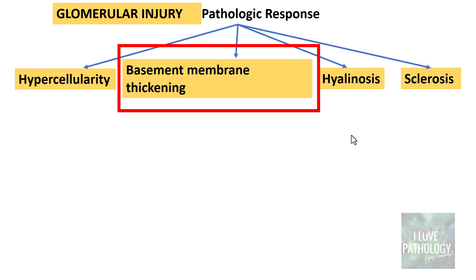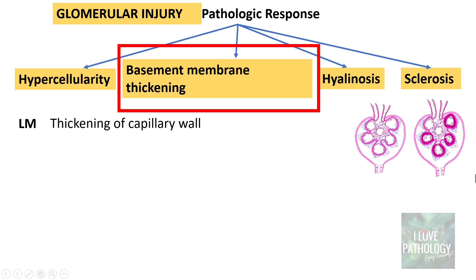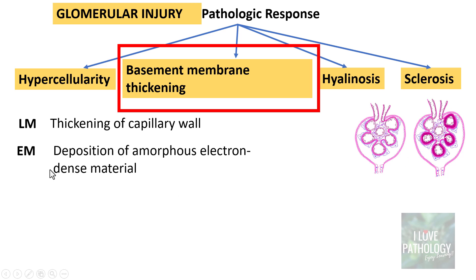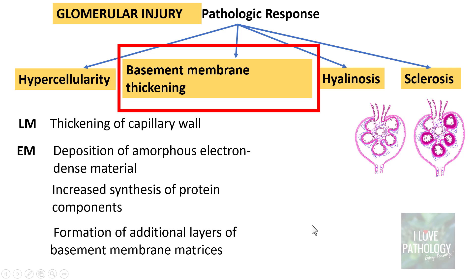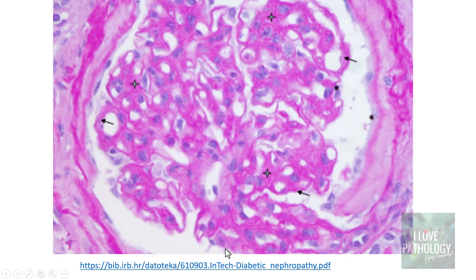The second response is basement membrane thickening. On light microscopy, all you see is thickening of the capillary wall. On electron microscopy, what you notice is deposition of amorphous electron dense material, because of increased synthesis of protein components of the basement membrane, thereby forming additional layers of basement membrane matrix. This is the histological picture showing the increased basement membrane of the glomeruli.